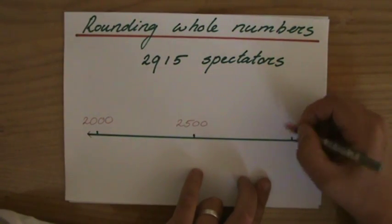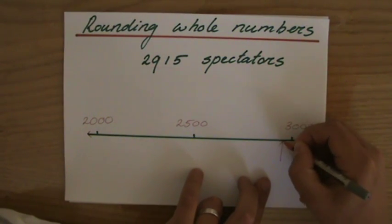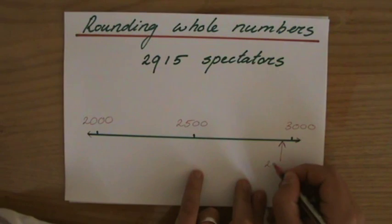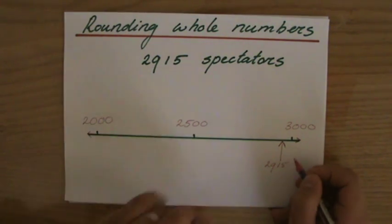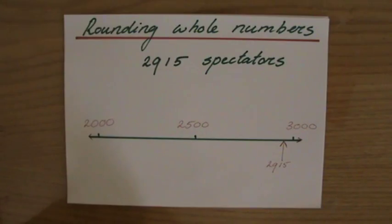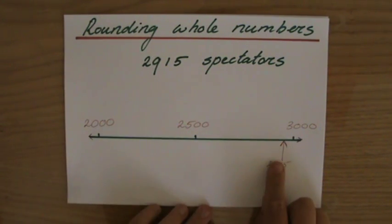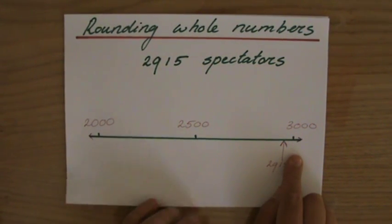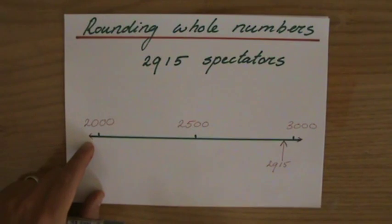Now that will be roughly, roughly here. I'm just estimating 2,915 is roughly over there. So to the nearest 1,000, it is much closer to 3,000, as you can see, than it is all the way to 2,000.